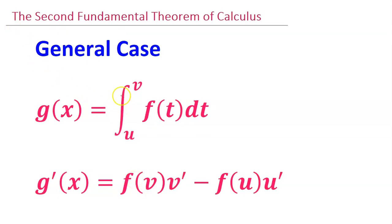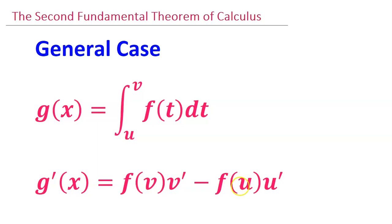Then there's the general case, where the upper or lower limit of integration is a function of x. In this case, the second fundamental theorem of calculus says you take the inner function and you plug in the upper limit of integration. Then you multiply by the derivative of the upper limit. Then you subtract and you plug in the lower limit of integration times the derivative of the lower limit.